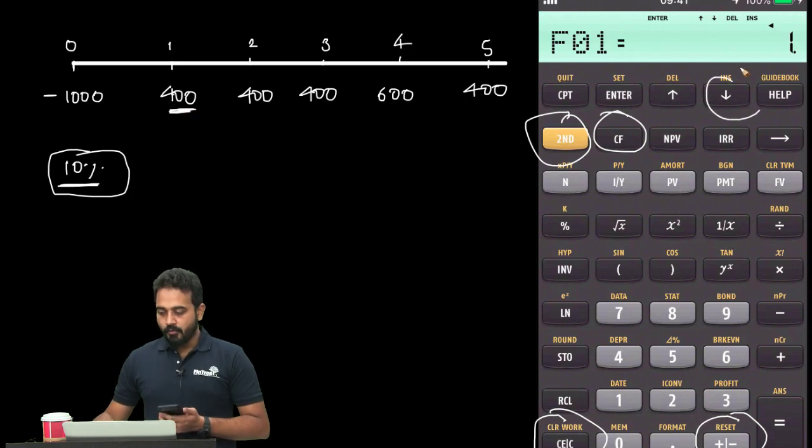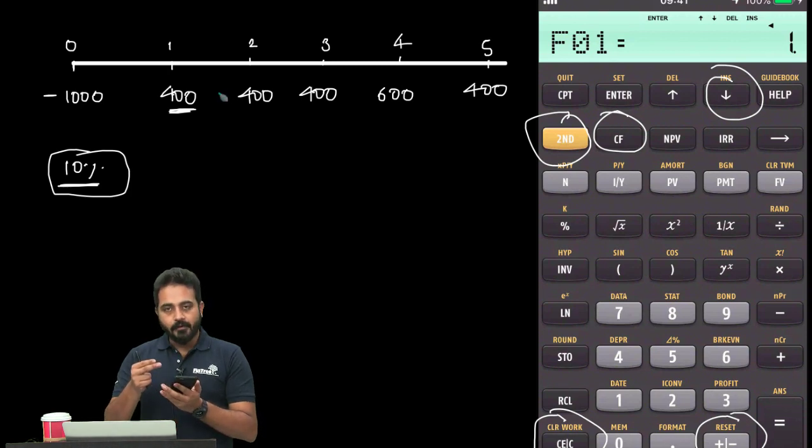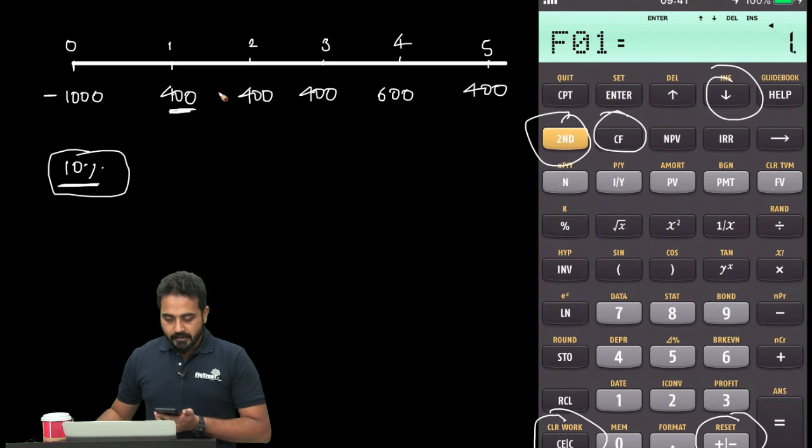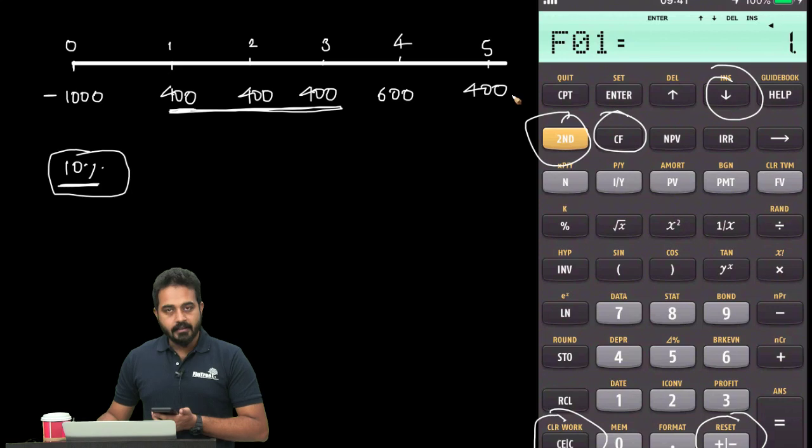The calculator is asking for the frequency. I'm going to count the number of times $400 is repeated consecutively—that's important here. One, two, three—$400 is repeated three times. Note that $400 is repeated later as well, but it's not consecutive, so it cannot be part of your frequency.